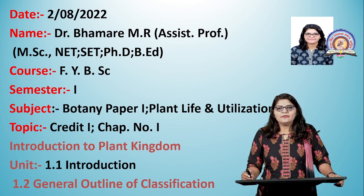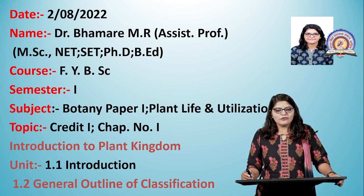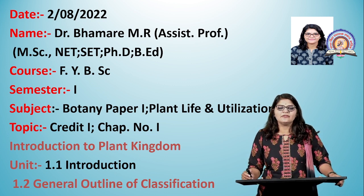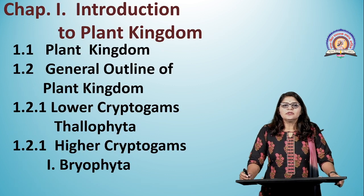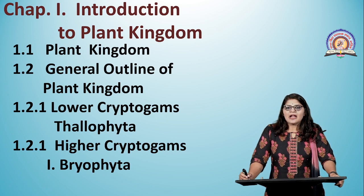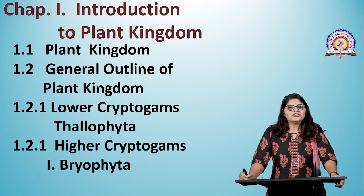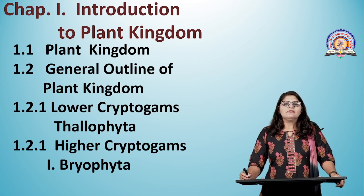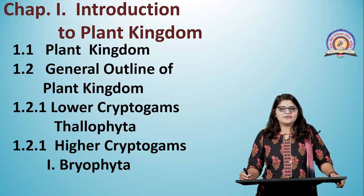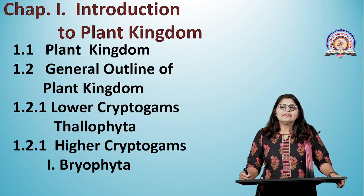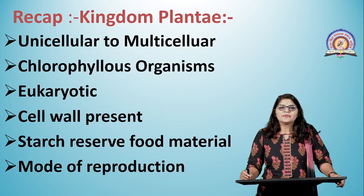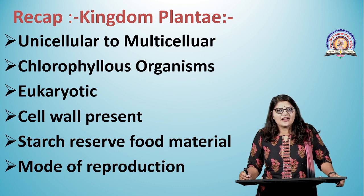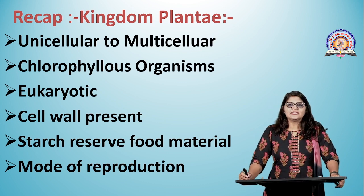The chapter name is 'Introduction to Plant Kingdom.' Today we focus on Unit 1.1, Introduction, specifically the general outline of the classification system. We will cover the introduction to the plant kingdom, the general outline, lower cryptogames — focusing on Thallophyta — and higher cryptogames, focusing on Bryophytes.